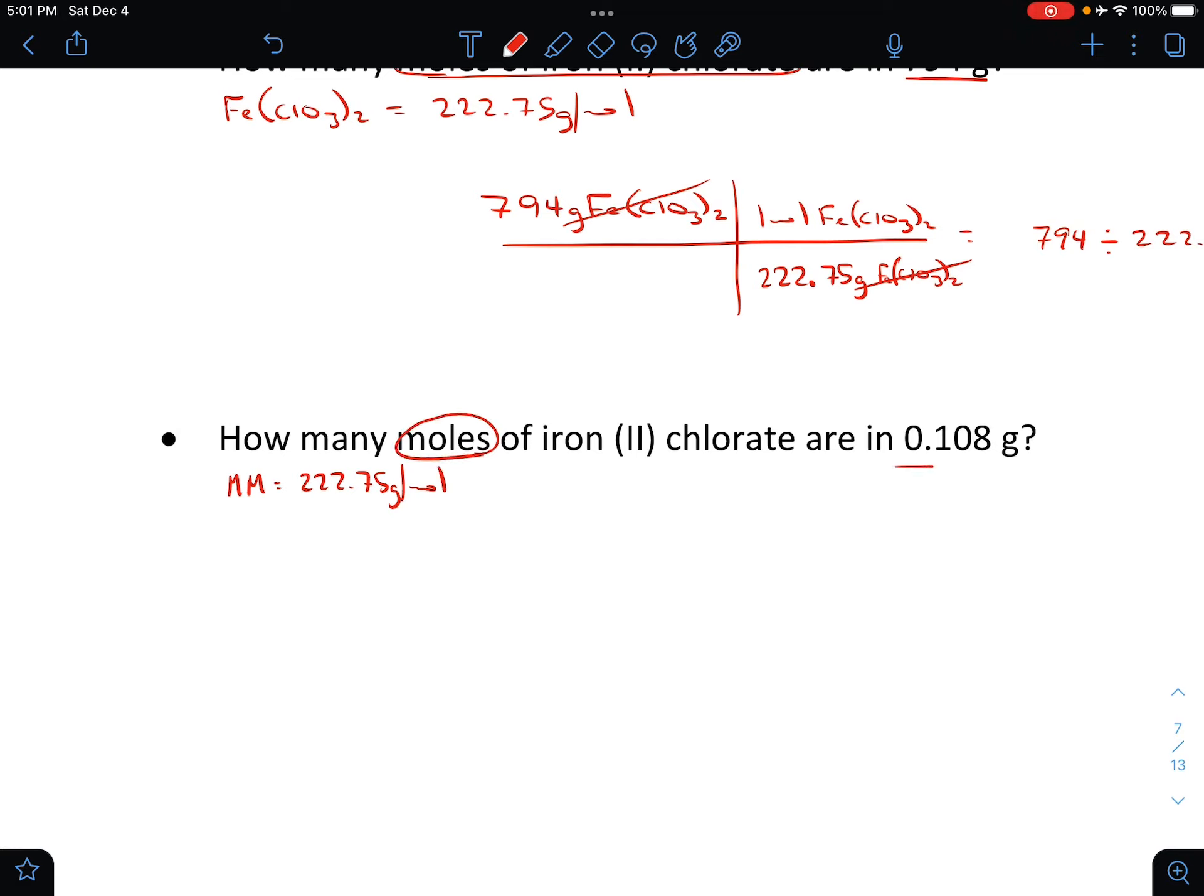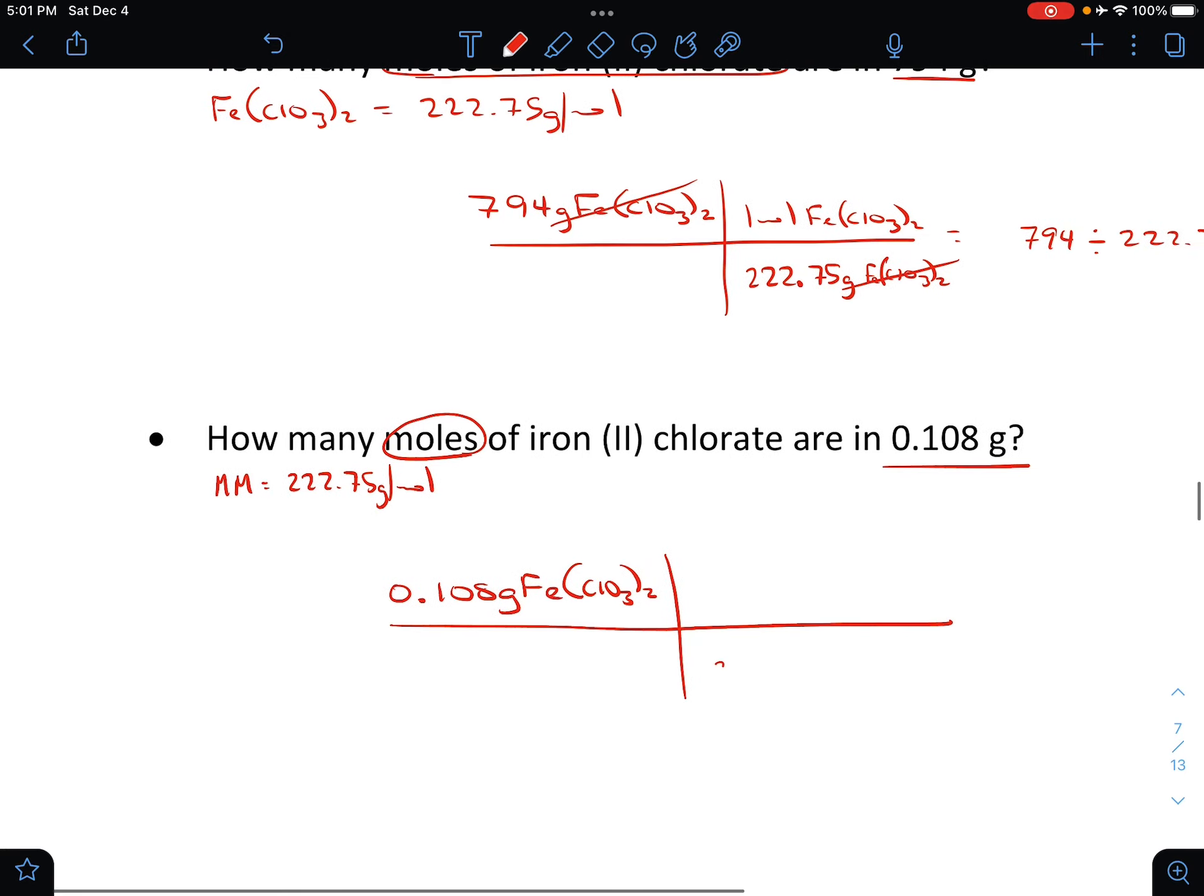Now we've got, we're still looking for moles, we have 0.108 grams. So we're going to start with 0.108 grams of Fe(ClO3)2. Remember we want grams to cancel, that's why we put 222.75 on the bottom, and we'll put one mole on top. Oh, and now the whole neighborhood's going. That's awesome. Again, lucky us. Hopefully you can't hear that.